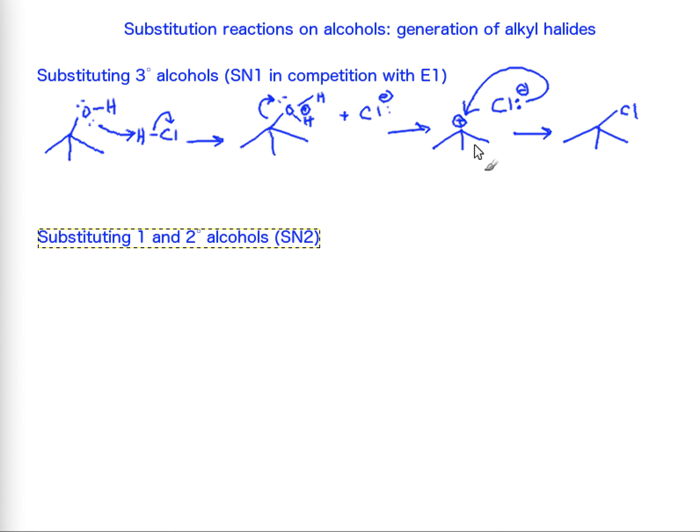We won't have a nice primary or secondary carbocation form very quickly, and so we have to use other reagents in order to substitute that alcohol group. Let's take a look at a mechanism and set of reagents that can substitute for primary and secondary alcohols.